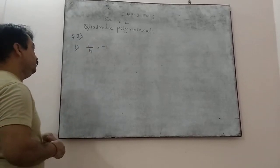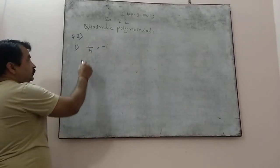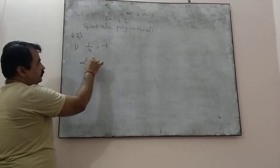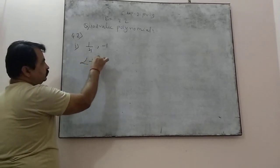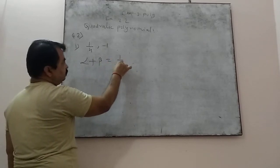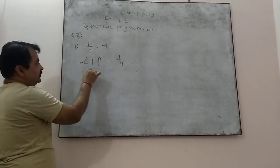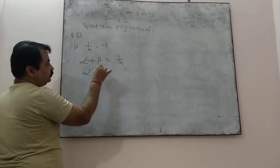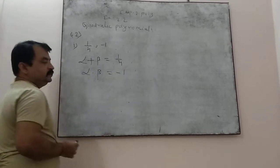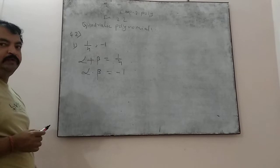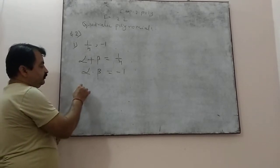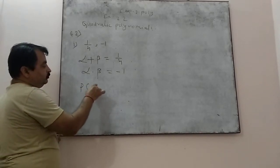Now, according to the question, the first value — sum of zeros, that is alpha plus beta — is given as 1/4, and the second value — product of zeros, that is alpha into beta — is given as minus 1. So you have to make the quadratic polynomial.